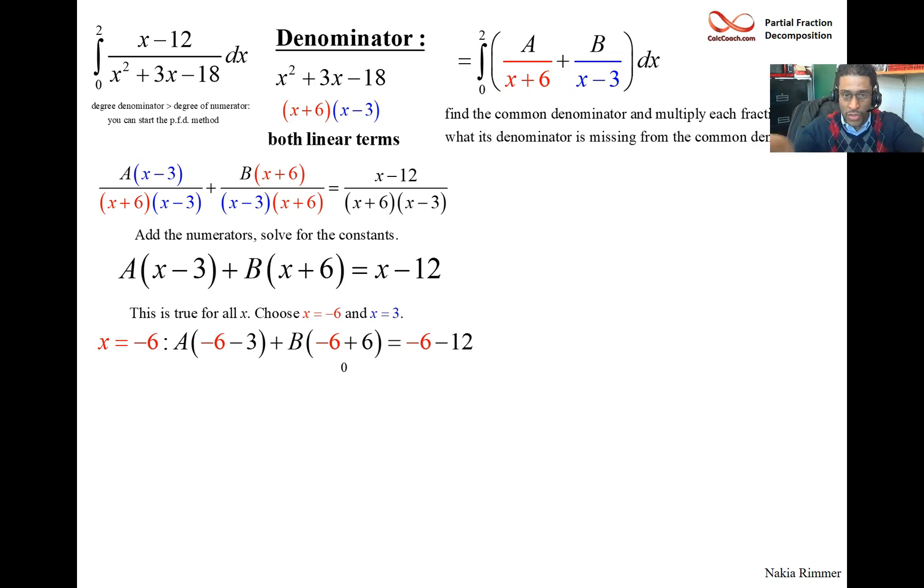Not the denominator. We're focused on the numerators now. You just do that, and it kills the other variable. And so that says that negative 9A is negative 18. So A must be 2.